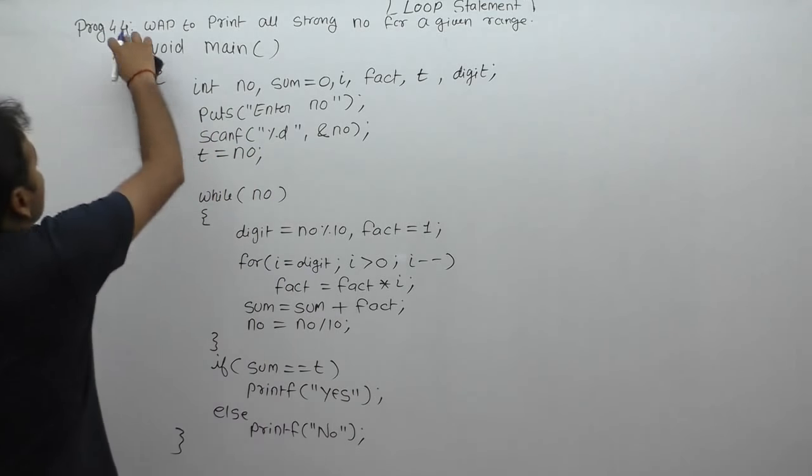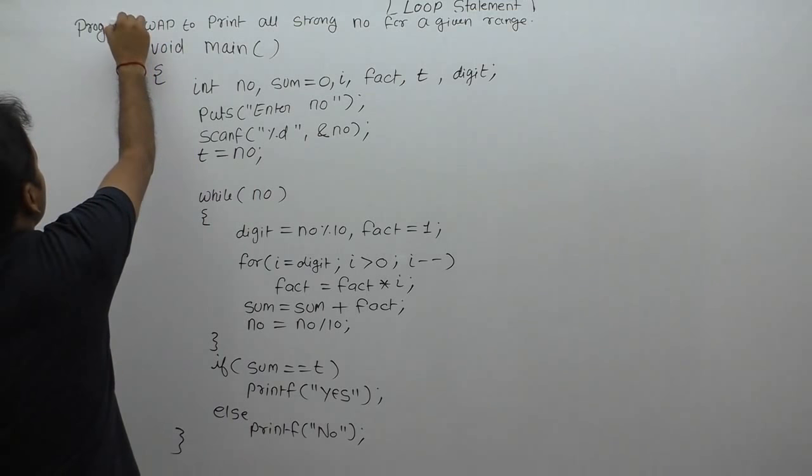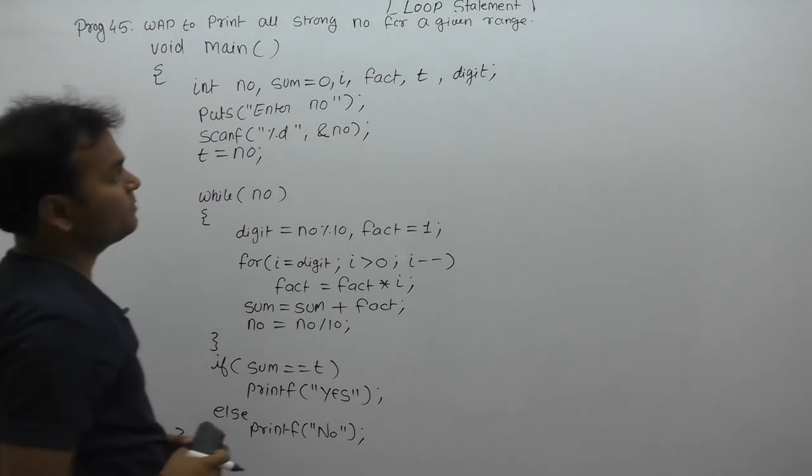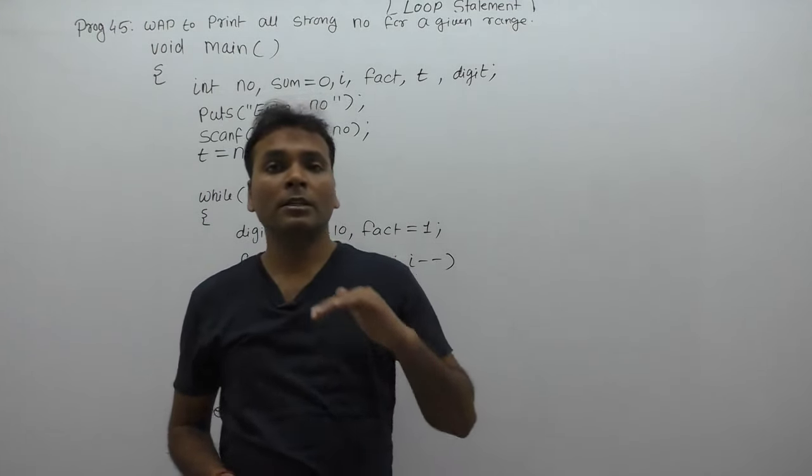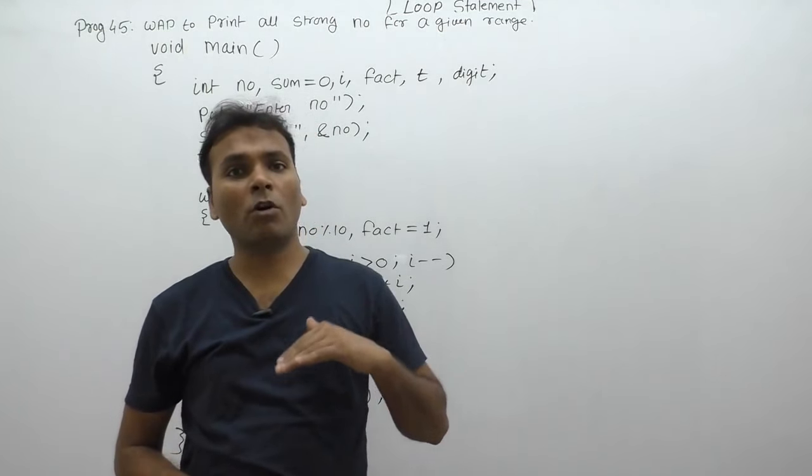Program to write a C program to print all strong numbers for a given range. In the previous case, we only displayed whether a given number is a strong number or not. But in this case, you want to display all strong numbers for a given range.